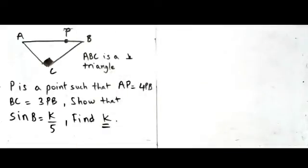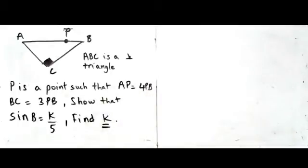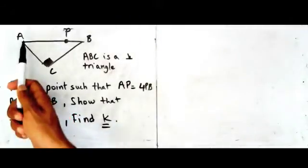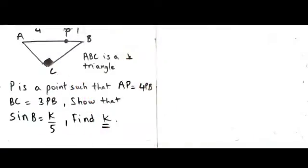At the beginning it looks quite confusing, but if you tackle the question step by step you should be able to understand it. Whenever you have that sort of question, always use the diagram to write down what you know. In this case, we know that P is such that AP is 4 times PB — so A to P is 4 times bigger than P to B. This part is 4 times bigger than that part, so that part must be just one part.